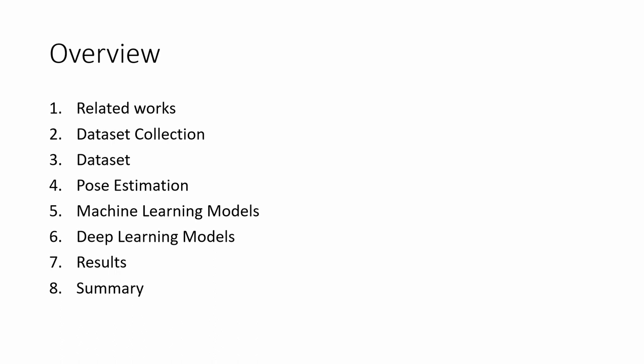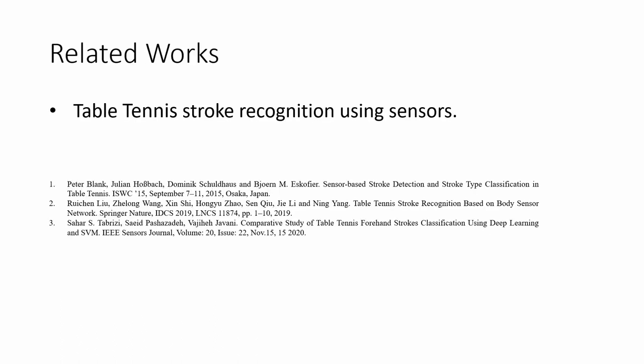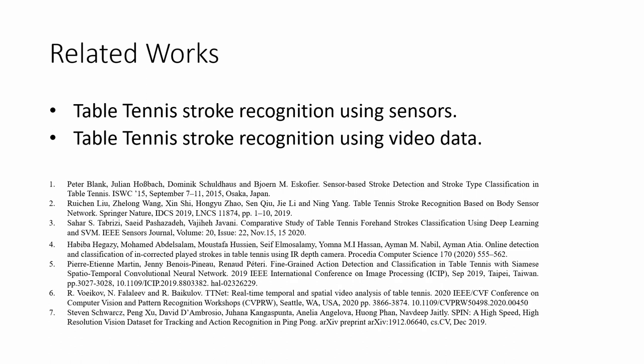The overview of the presentation is as shown. There are two major approaches to table tennis stroke recognition. The first one involves the use of intrusive sensors such as acceleration sensor, inertial sensor, etc., mounted on either the body or the equipment of a player for stroke classification. References 1-3 cite works done in this regard. The second approach is based on the application of deep learning models on table tennis video data for stroke detection and classification. References 4-7 cite the research work carried out in this regard.